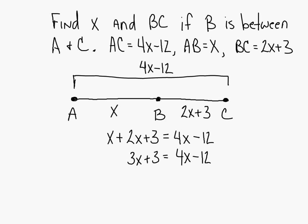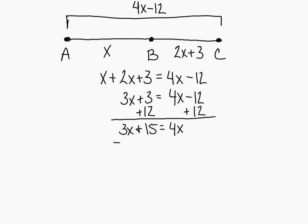What's next? Add 12 to each side. That'll work. So 3x plus 15 is equal to 4x. What do you want to do next? Subtract 3x. Excellent. Subtract 3x from each side. So 15 equals x.